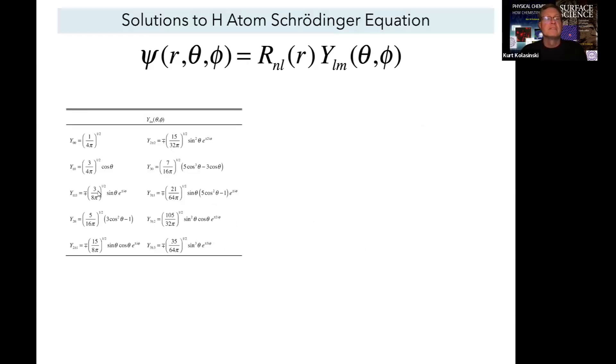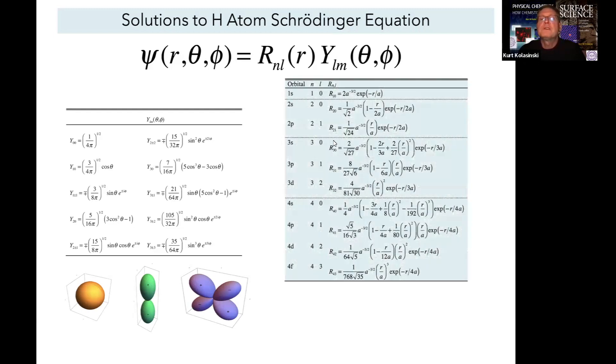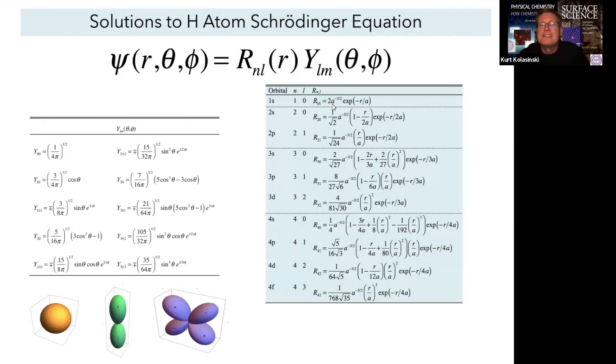We've got the ylms, we've already encountered those. We know what they look like—they give us the shapes of the orbitals. Then there's this radial part. The radial part has the normalization constant, we always need to normalize our wave functions.